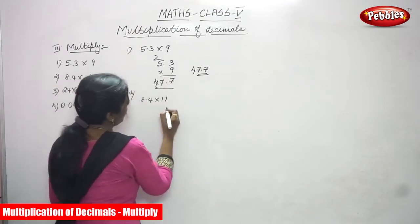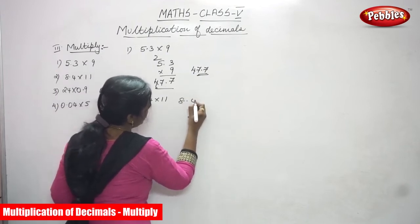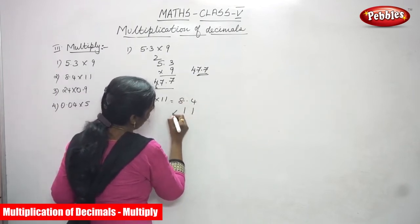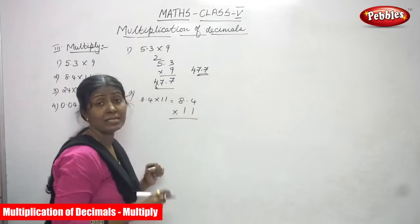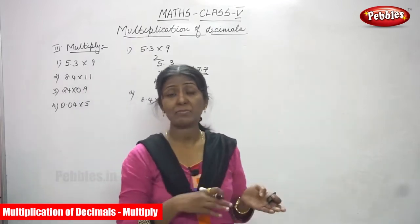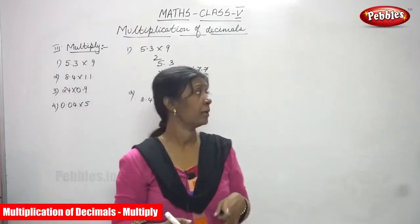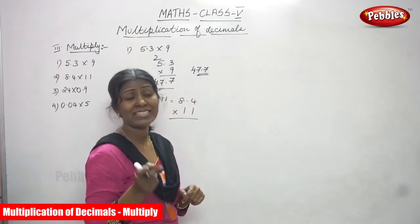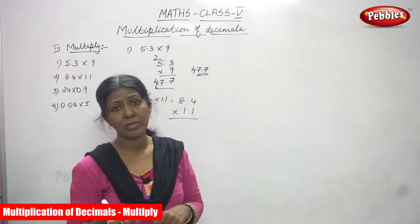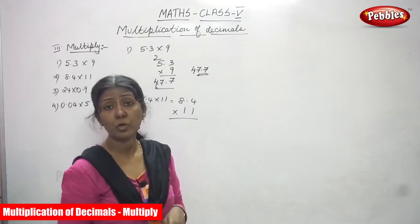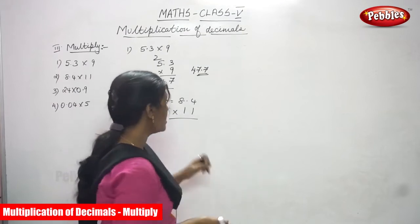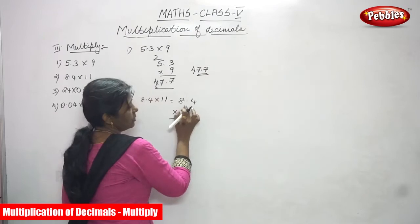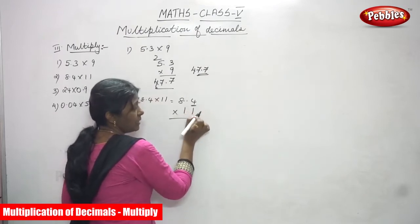8.4 into 11. So 8.4 is a decimal and 11 is a whole number, so we are multiplying a decimal with a whole number. The first sum was also the same — 5.3 is a decimal number and 9 is a whole number. For 8.4 into 11, we start with the decimal number.